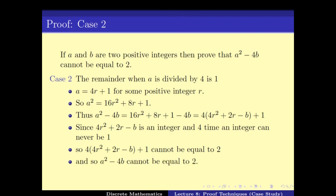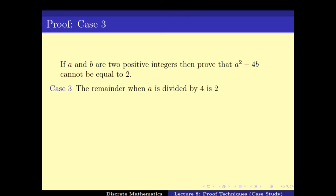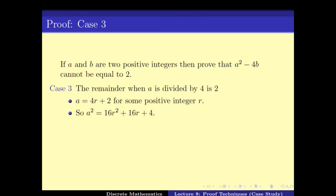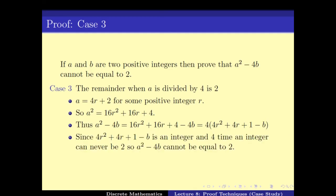Case 3: A has remainder 2 when divided by 4, so A = 4R + 2 for some positive integer R. Squaring gives A² = 16R² + 16R + 4. So A² - 4B = 4(4R² + 4R + 1 - B), which is again 4 times an integer, and hence cannot equal 2.